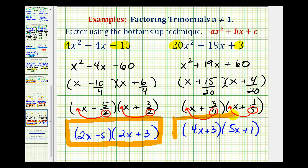This is how you use the bottoms up method to factor trinomials when a is not equal to one.